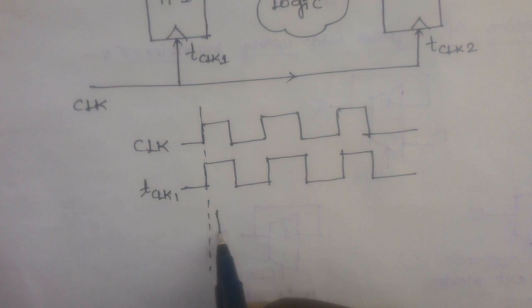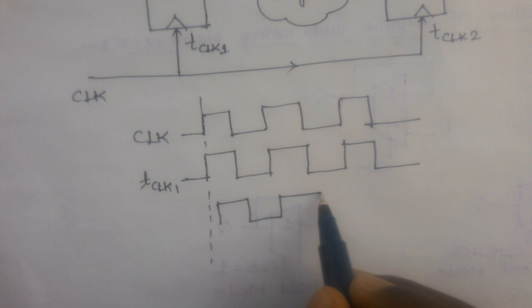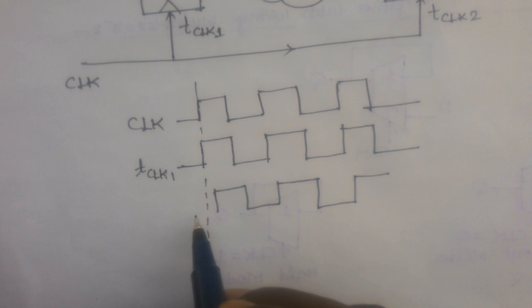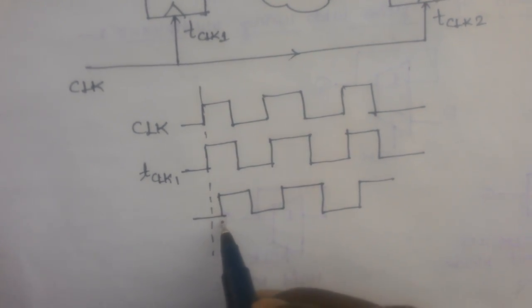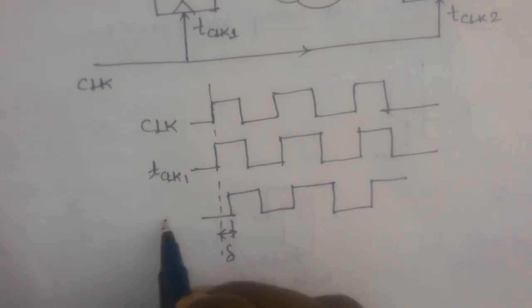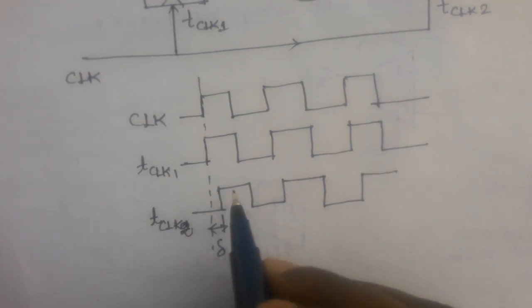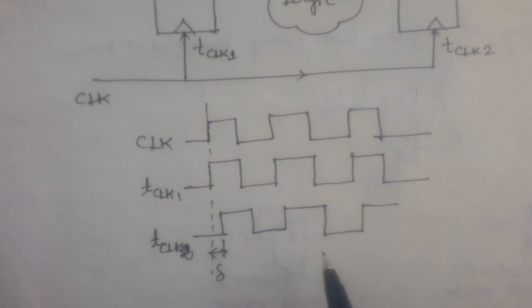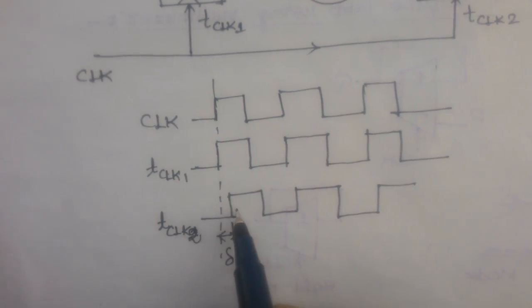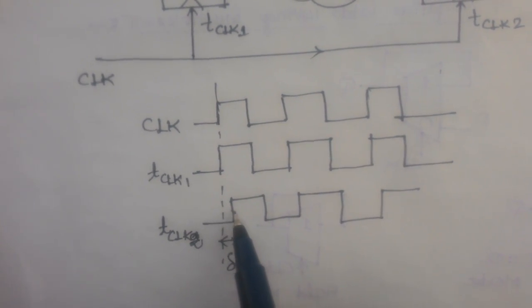Suppose I am receiving clock 2 after some time delay. This difference — this delta — is represented by clock skew. Clock skew is nothing but the variation in the arrival time of the clock transition.